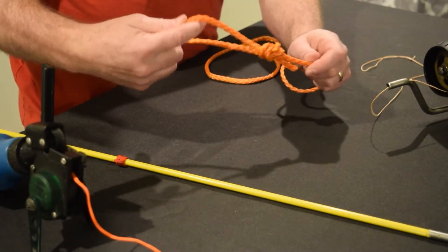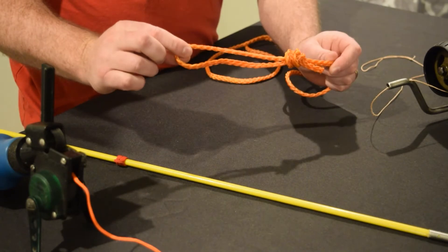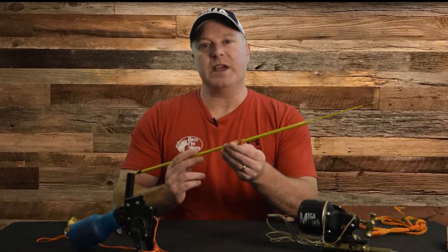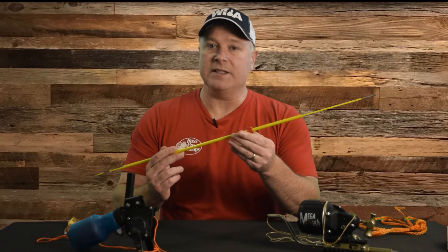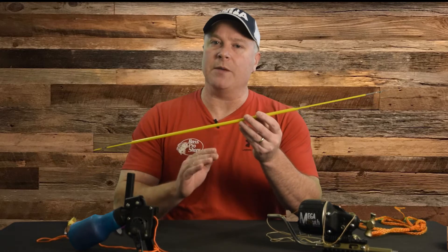Your knot will be down here, and you'll have a loop that you can use to make your connections on your arrow. Here's a basic fiberglass arrow. And for attachment, you usually have three options.